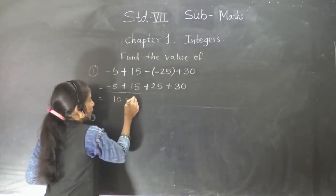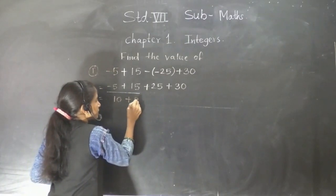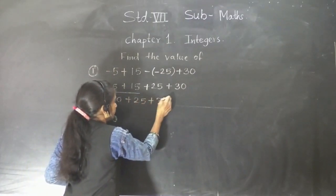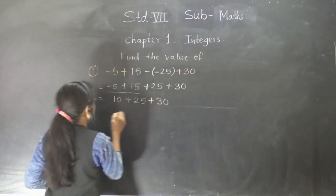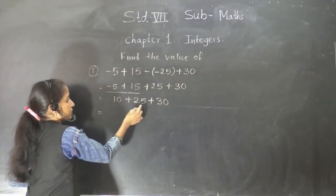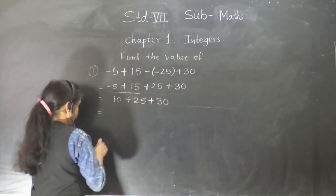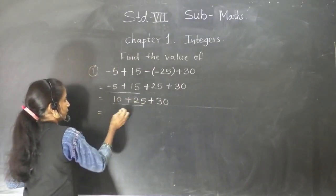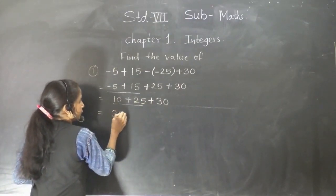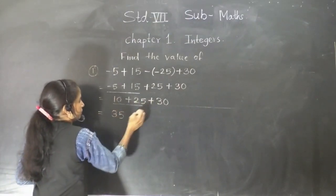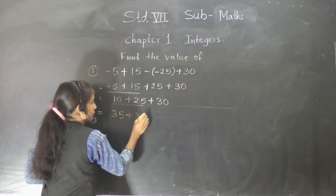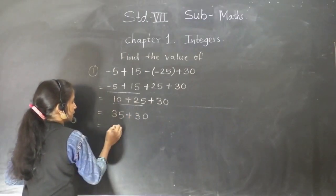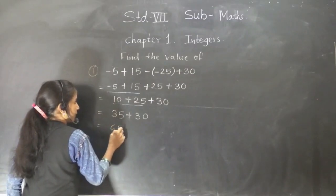Plus. Next number: plus 25 plus 30. So 10 plus 25 will become 35. Plus 30: 35 plus 30 is equal to 65.